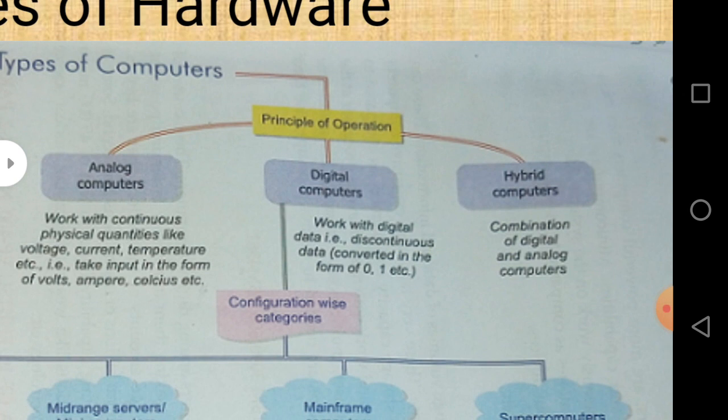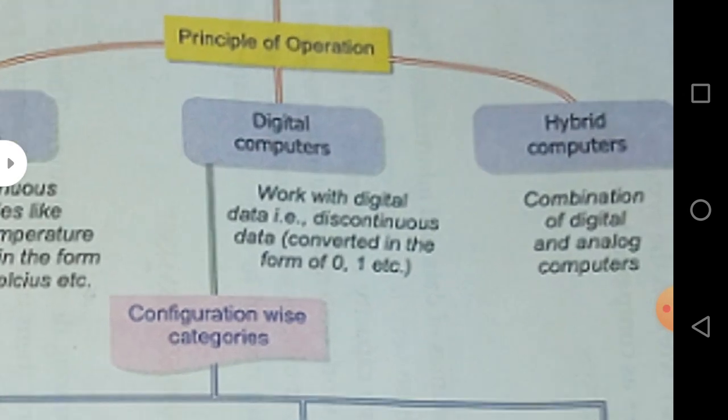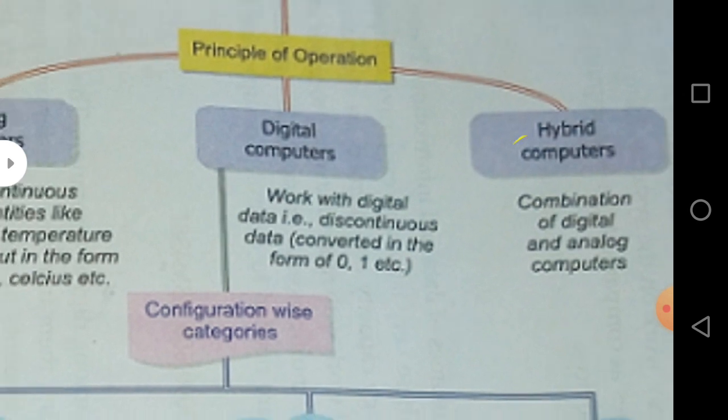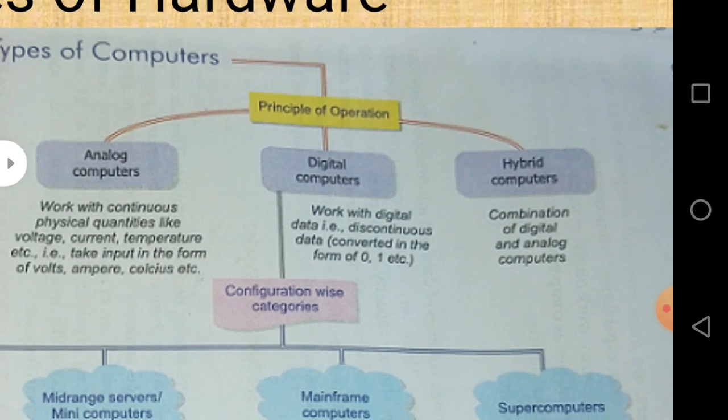Digital computers work with digital data. Digital data means discontinuous data — that is 0 or 1. So they receive data in the form of 0 and 1 only, and that's why they are called digital computers. They are the most common type of computer nowadays. Hybrid computers, as the name suggests, are the combination of both analog and digital computers, and that's why they are called hybrid computers.